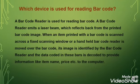A barcode reader emits a laser beam which reflects back from the printed barcode image. When an item printed with the barcode is scanned across a fixed scanning window or a handheld barcode reader is moved over the barcode, its image is identified by the barcode reader and the data coded in these bars is decoded to provide information like item name, price, etc. to the computer.